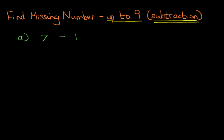We have 7 minus something equals 3, and the second one we have is something minus 4 equals 2.